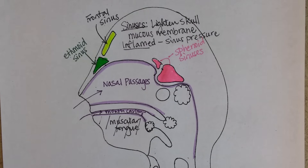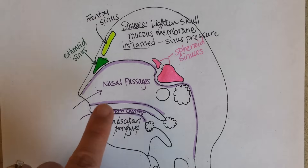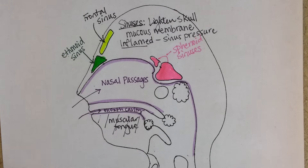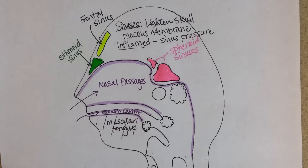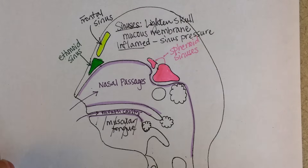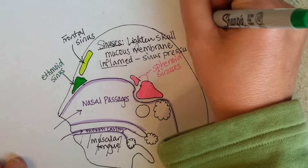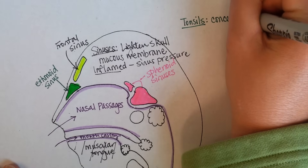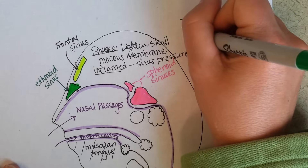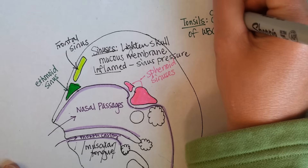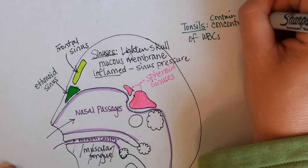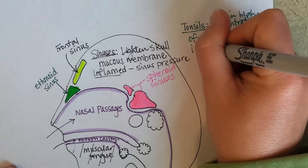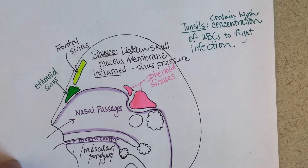Bacteria can also get into the sinuses. Your nose, your eye — your tears drain down to your nasal passages, and those are connected with the sinuses as well. So it can be an area where you can get a bacterial or viral infection. But you have lots of tonsils to fight off pathogens, and they contain a high concentration of white blood cells to fight infection.